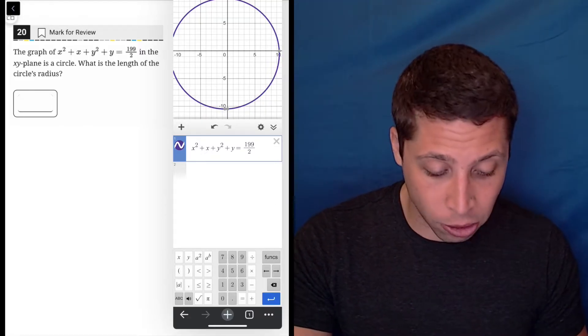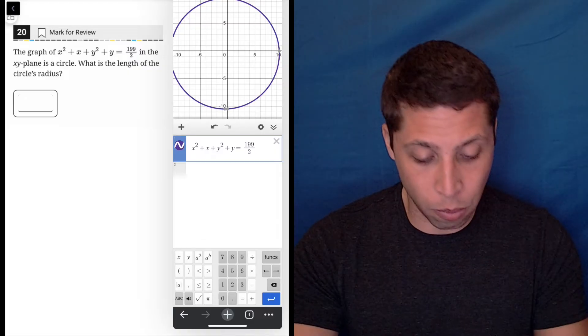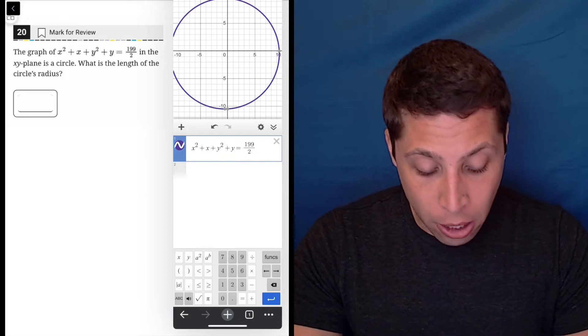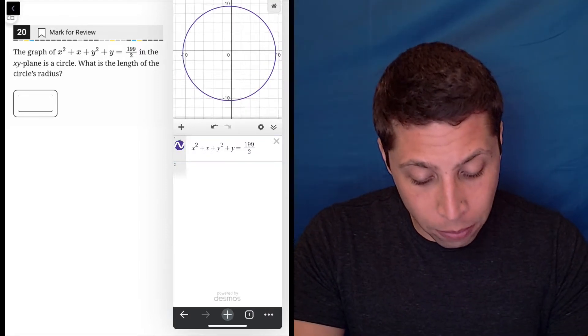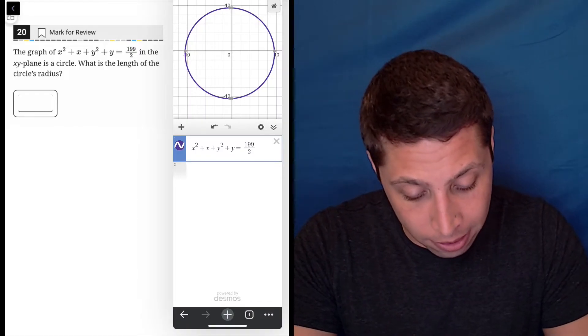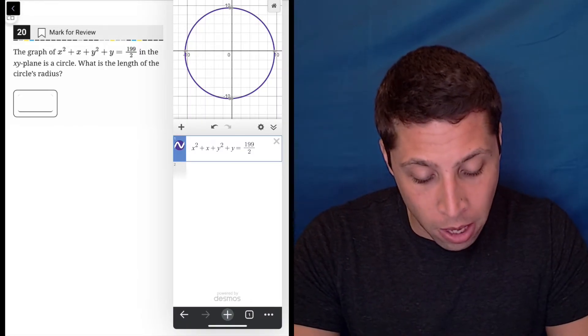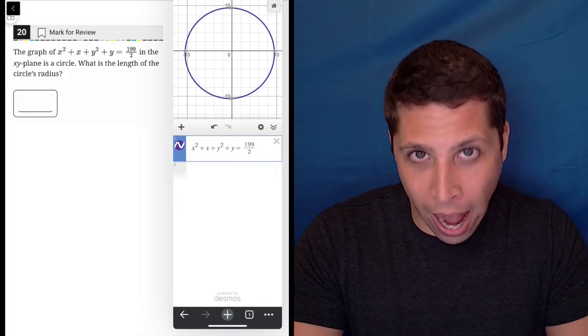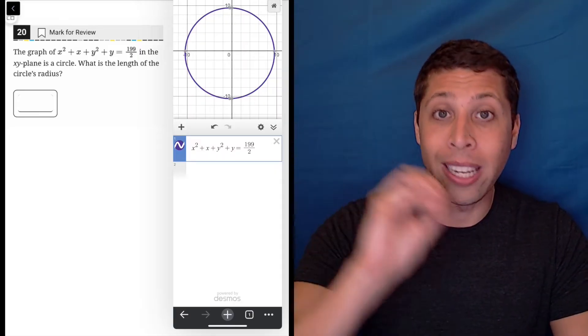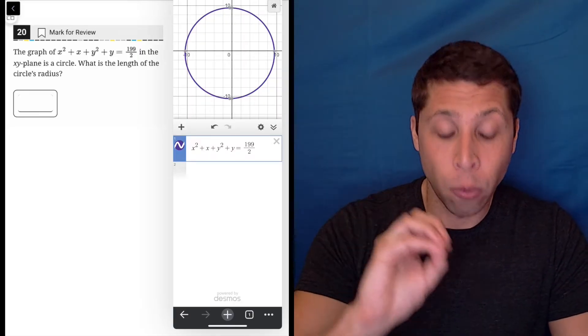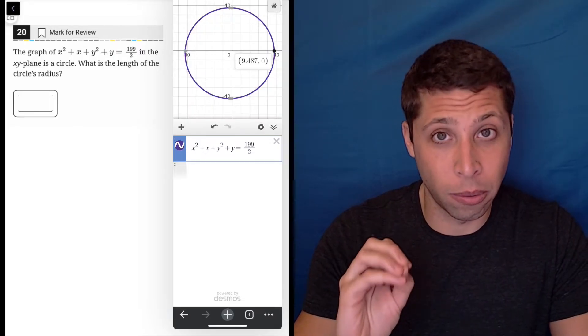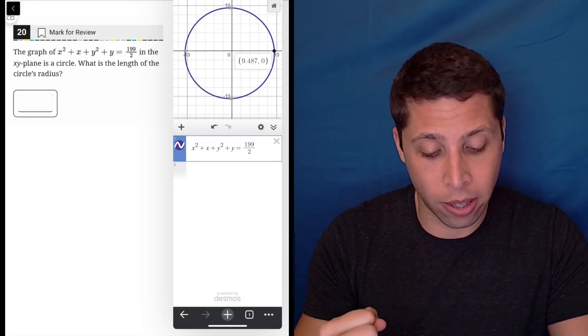And then they want the radius, and so I'm trying to figure out basically what's the distance across. You've got to be careful because for whatever reason, they're always going to highlight certain points. You can see these little dashes or these little dots on my circle.